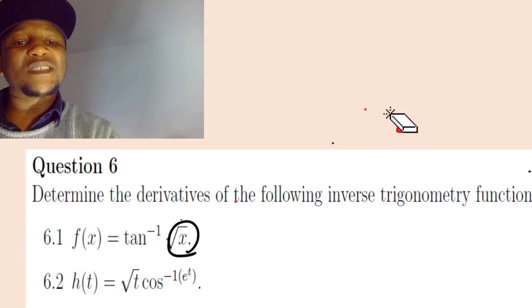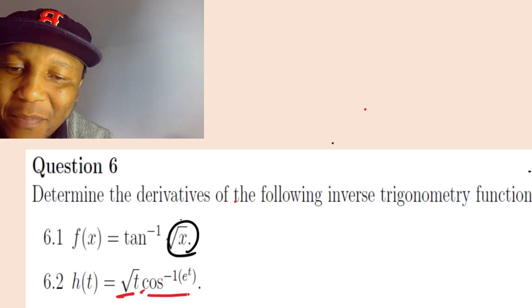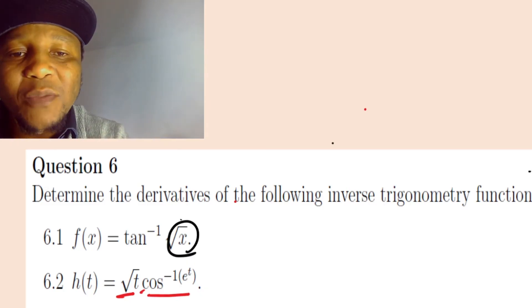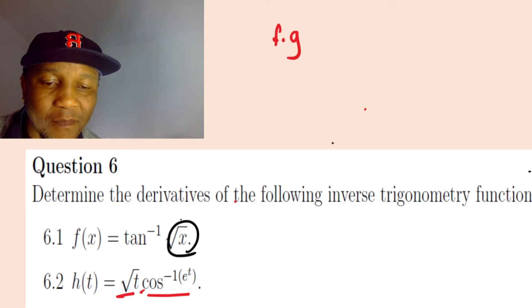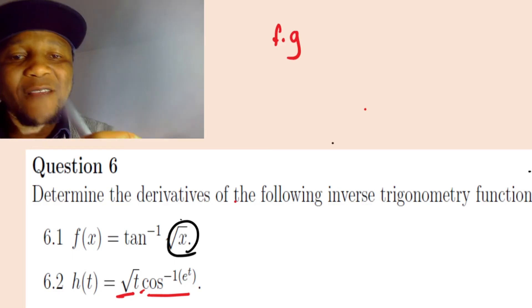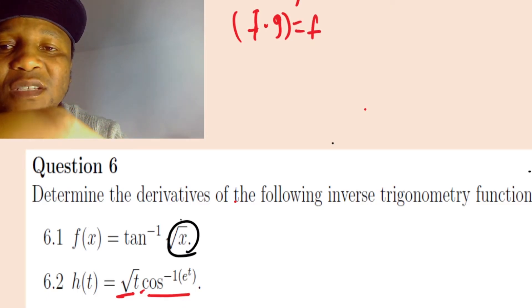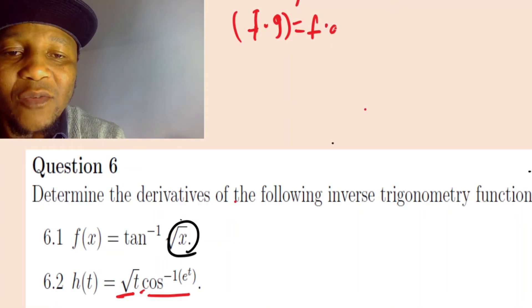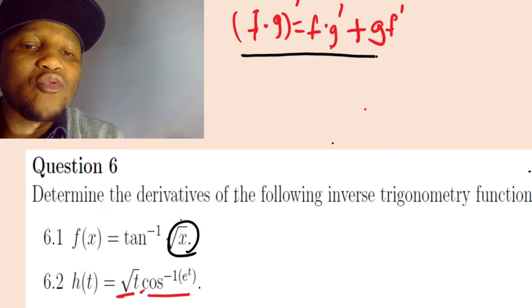The second question is the product rule of a function, because you have a first group multiplied by a second group. The product rule says if you have f times g and you derivate, it's the same as putting the first as constant and derivating the second, plus switching - the first becomes constant and you derivate the first.